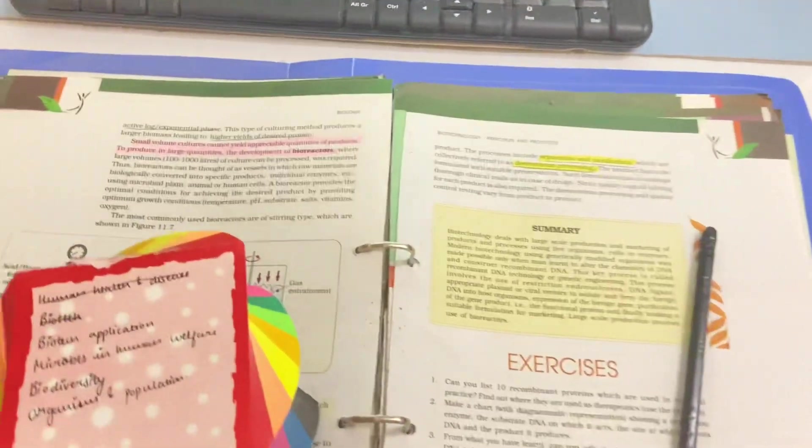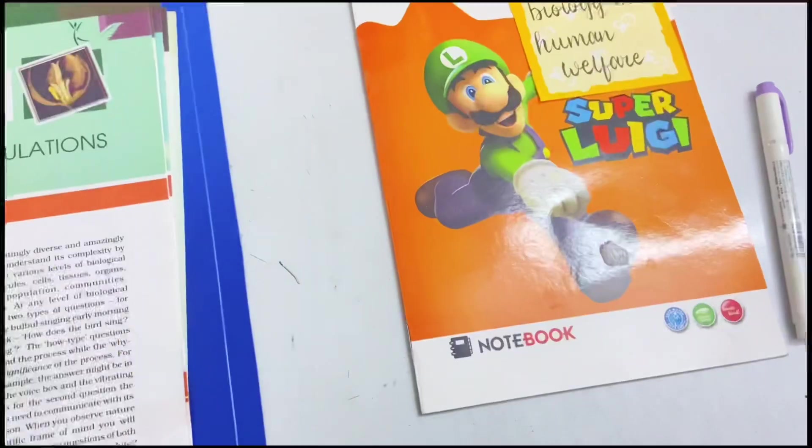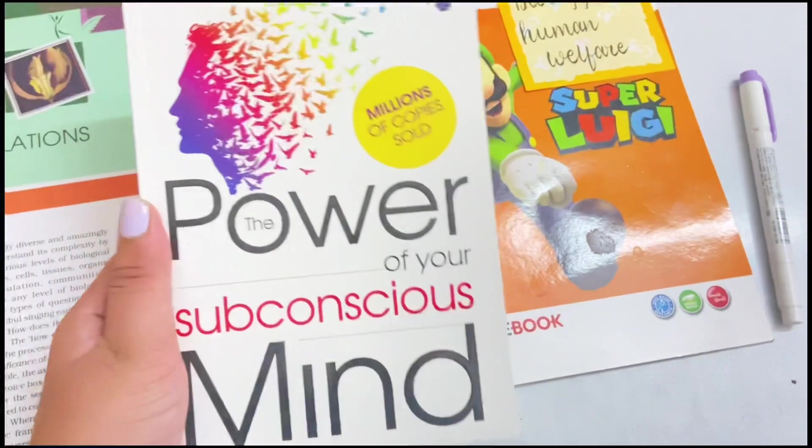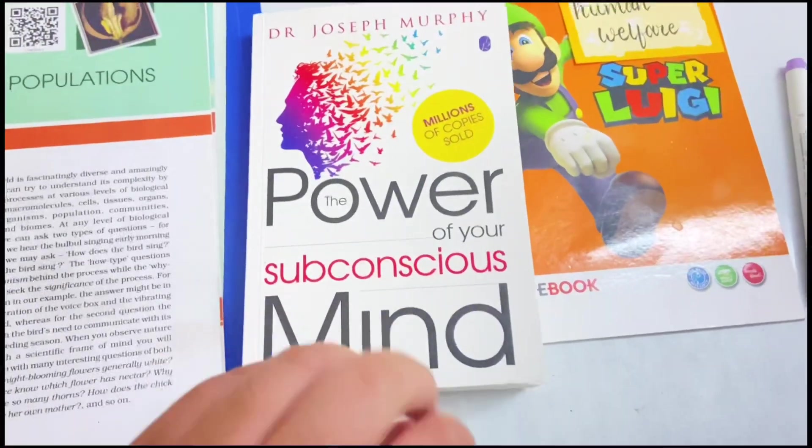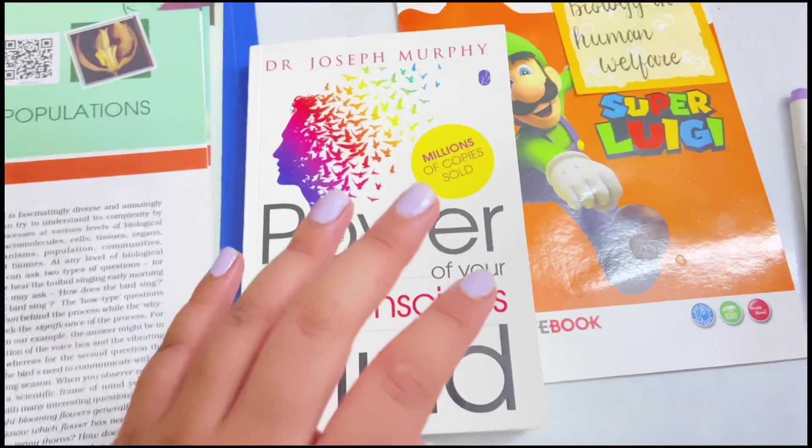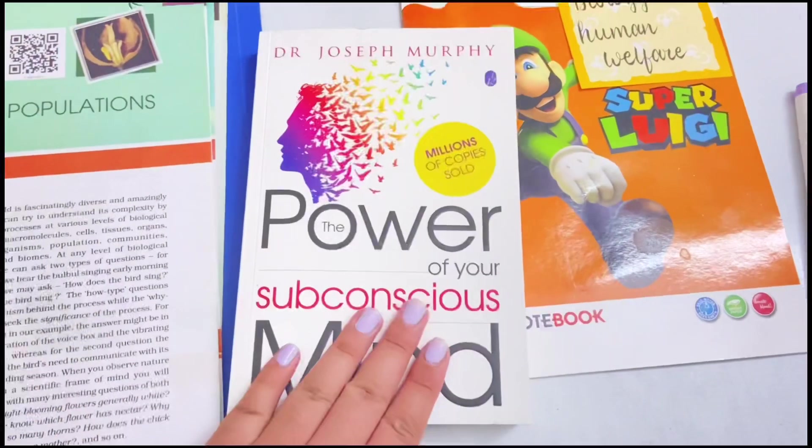Now I'm going to take a break for some time and then continue with maybe Microbes in Human Welfare. I've just received this book which is The Power of Subconscious Mind - I ordered this from Amazon. I really want to start reading books after I'm done with my exam, so I've ordered this one.